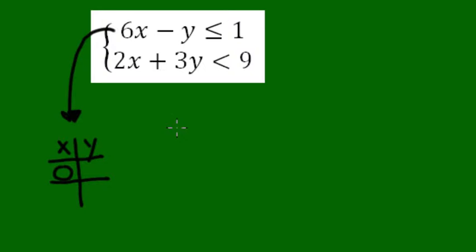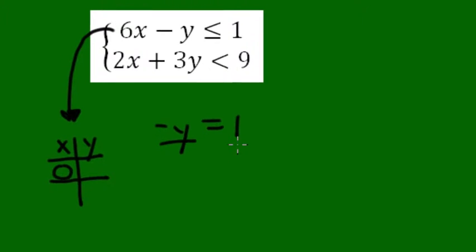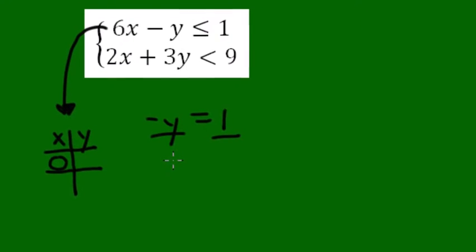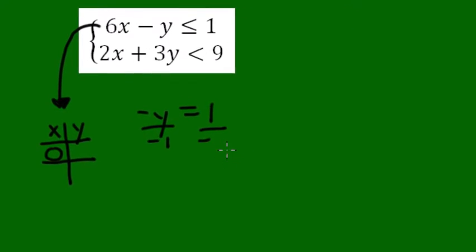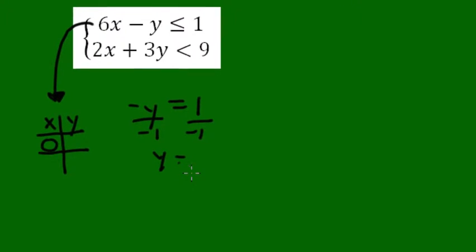So I'm going to get minus y and I'm going to get a 1 on the right. And for the purpose of me graphing the line, I'm only going to be concerned with the equality for now. We'll deal with the inequality in a moment. So to graph this, I need to continue solving this. We're going to divide both sides by a negative 1.